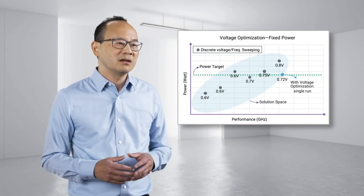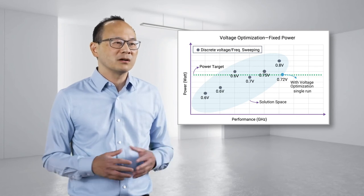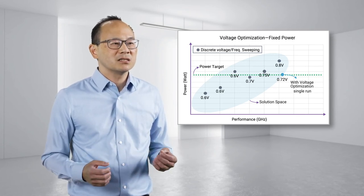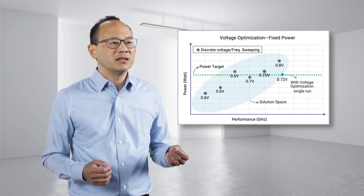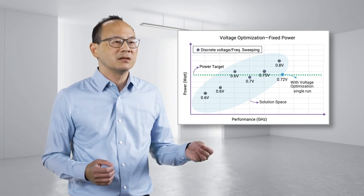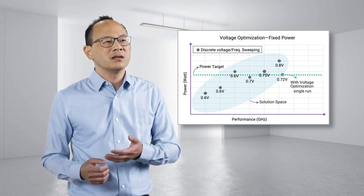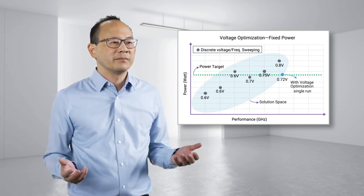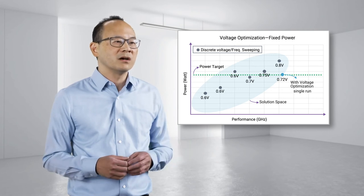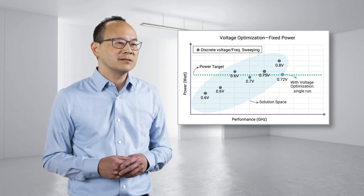Alternatively, in a design flow with a fixed total power target, the optimization engine can explore the voltage range and find the best possible frequency that meets the power target within a single run, which may not have been achieved otherwise due to time and resource constraints.